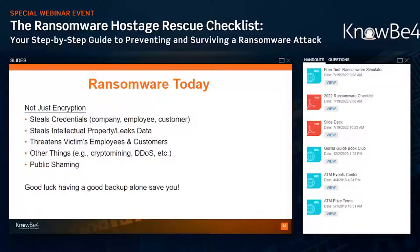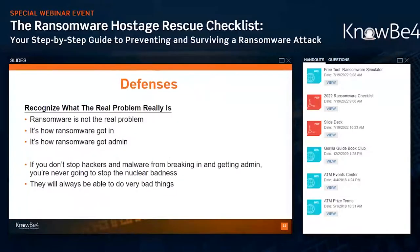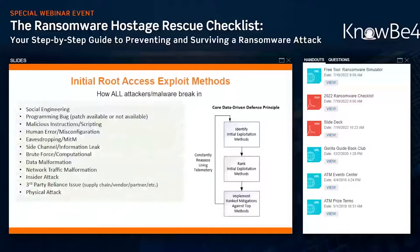You need to recognize that ransomware is not your real problem — it's how the ransomware got in. Did it get in because of social engineering, unpatched software, stolen credentials, or a USB key? You need to figure that out, because whatever way ransomware got in is a vulnerability in your defenses. Even if ransomware went away and never came back, if you don't close the way it got in, it's just going to be something else using the same vulnerabilities. If you want to stop ransomware and really all hackers and malware, you need to figure out what methods they use to gain initial access and then stop them.